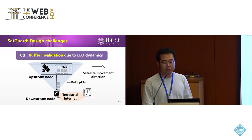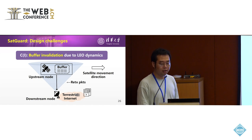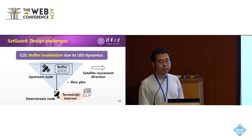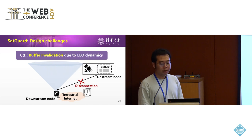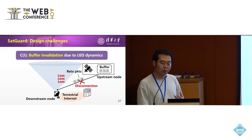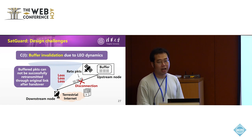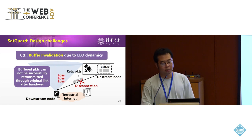The first challenge is buffer invalidation due to orbital dynamics. Normally, the upstream satellite node is within view of the downstream ground station node, so local retransmission packets can be transmitted successfully. But as the satellite moves on, it goes out of view of the ground station and the link breaks down. In this scenario, local retransmission packets may be lost again. In other words, buffered packets cannot be successfully retransmitted through the original link after handover.